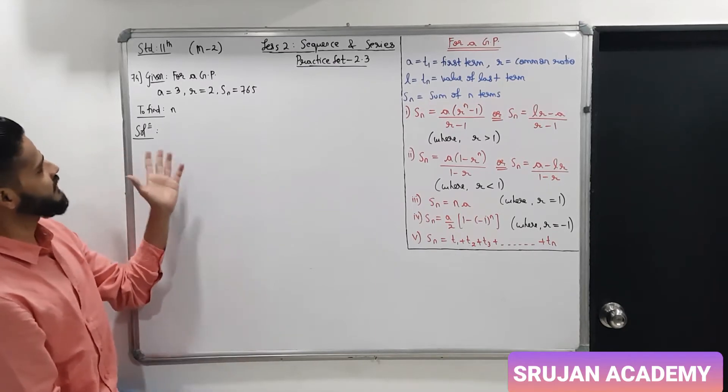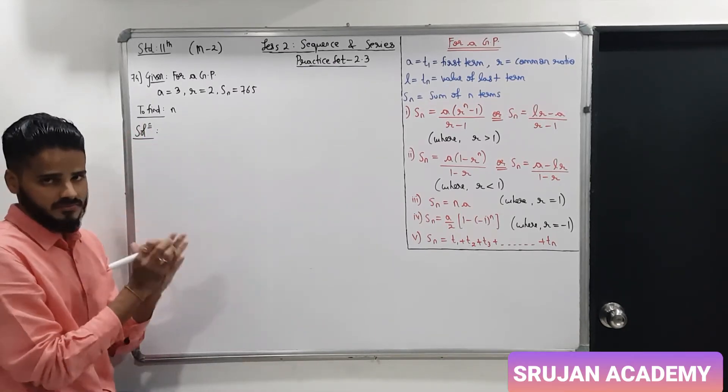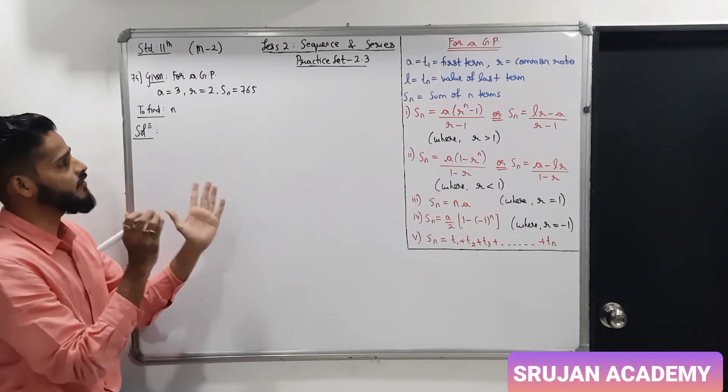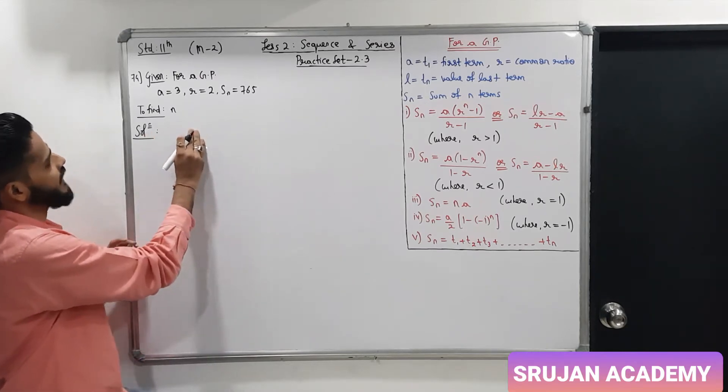Sum number 74. The given part is, for a GP, a is equal to 3 and the value of first term is 3. Common ratio R is 2. And Sn sum of n terms is 765. Find the value of n.